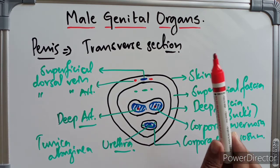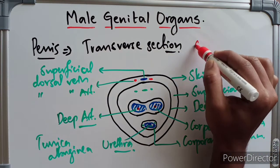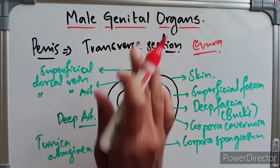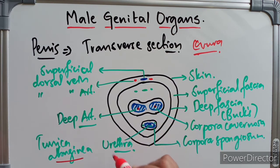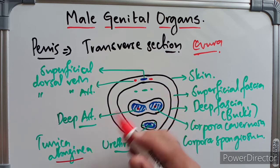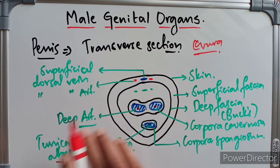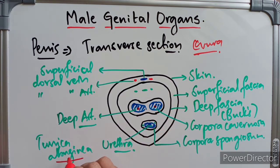The corpora cavernosa form the greater part of the body of the penis. They are the forward continuation of the crura, and the two corpora cavernosa lie in close opposition throughout their length, surrounded by a fibrous envelope called the tunica albuginea. The corpus spongiosum is the forward continuation of the bulb of the penis. It is cylindrical and tapers slightly towards the end, then suddenly expands to form a conical enlargement called the glans penis. Throughout its length it is traversed by the spongy part of the urethra and is also surrounded by a thin fibrous sheath called the tunica albuginea.